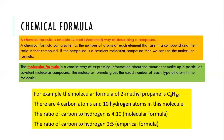Today we are going to talk about grade 10 physical science, term two. It's a chemistry paper topic — what we call atoms and compounds. In the second part of atoms and compounds, if you remember, we talked about covalent structure, ionic structure, and metallic structures.